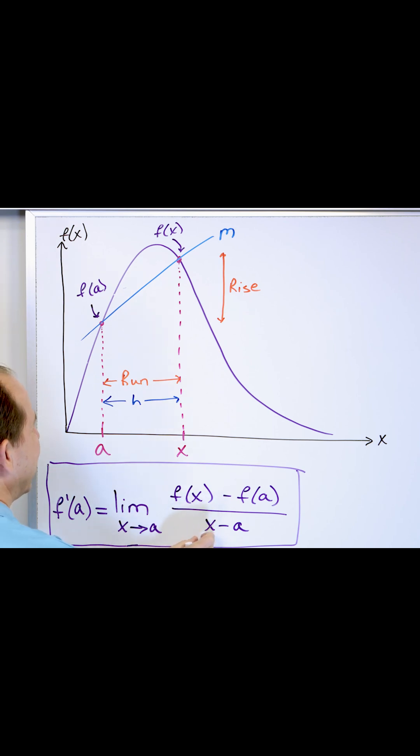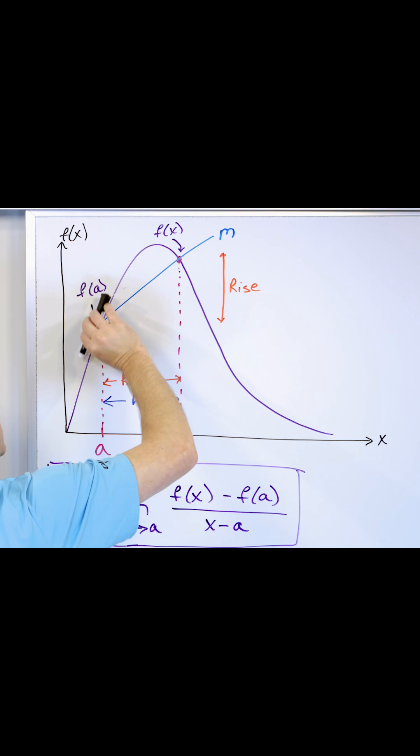Then we allow the point x, this point x, to slide closer and closer, bringing this point closer and closer to a. And as the limit as x approaches a is what we get the derivative of, which is the slope of the line tangent at exactly that point there.